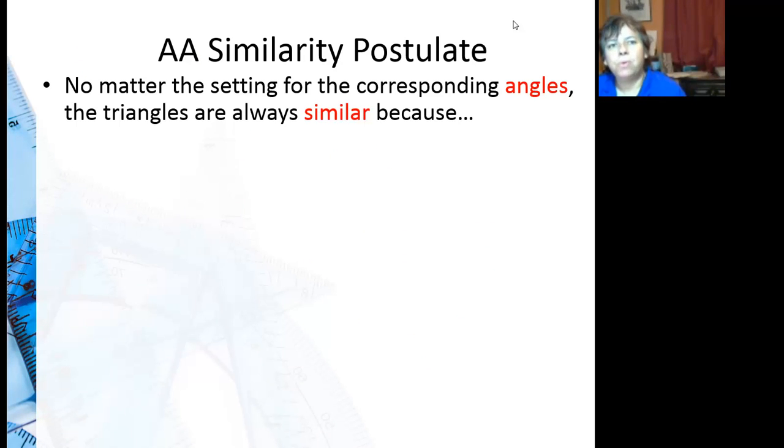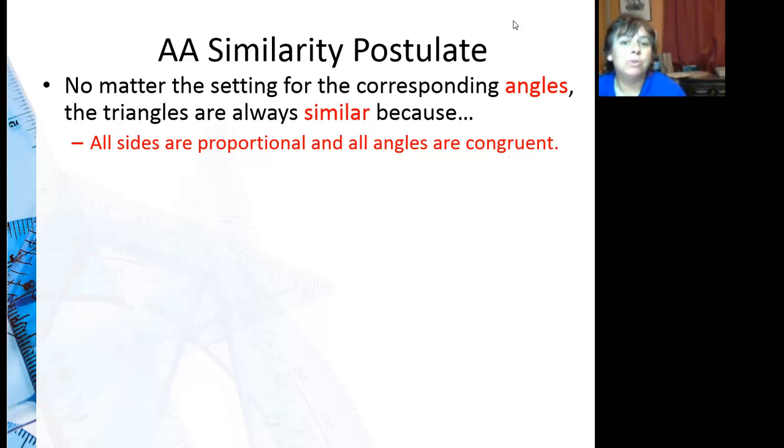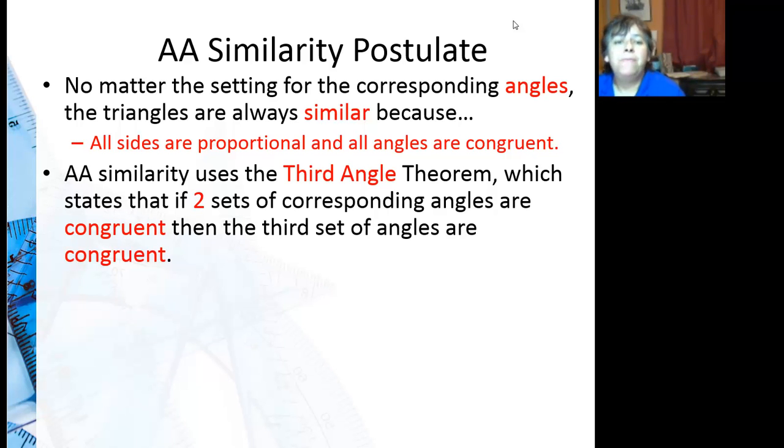No matter the setting for corresponding angles, the triangles are always similar because we saw that all sides are proportional and all the angles are congruent. Also, angle-angle similarity uses the third angle theorem. Because basically, if I know two angles on a triangle, don't I already know the third?